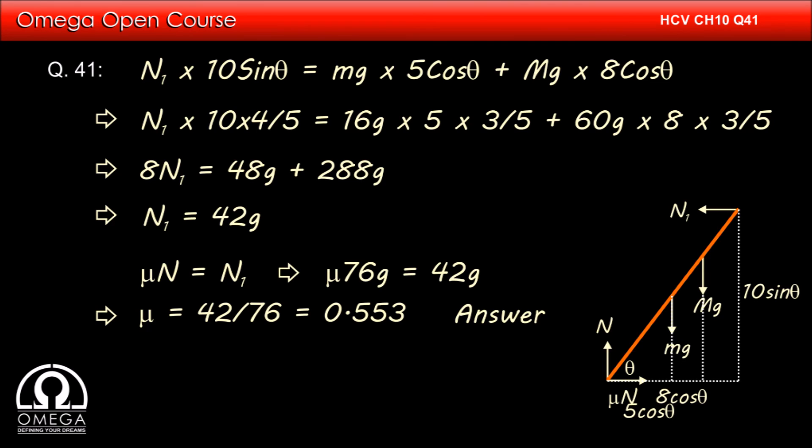This is the minimum value of coefficient of friction that will keep the system stable. Also, force of friction applied by the floor on the ladder is μN which equals N₁, which in turn equals 42g.